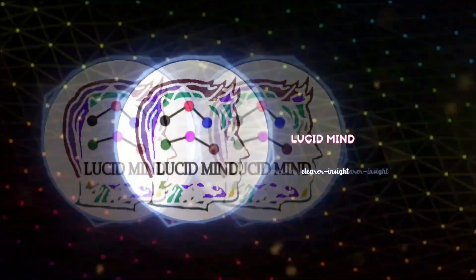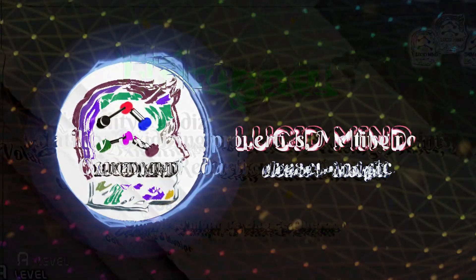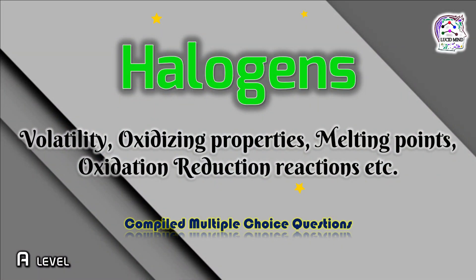Welcome to Lucid Mind Chemistry channel. In this video I have compiled questions related to the properties of elements of group 7, that is halogens, such as volatility, oxidizing properties, melting points, oxidation-reduction reactions, etc. For similar topics and question timestamps, read the video description.